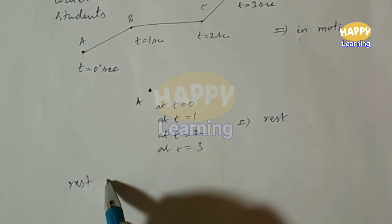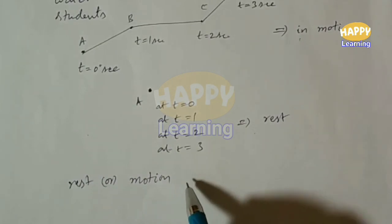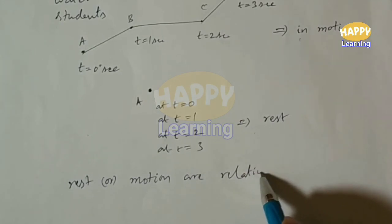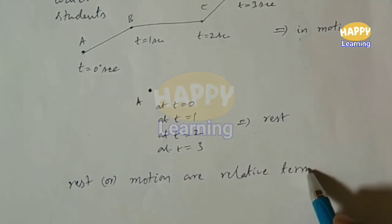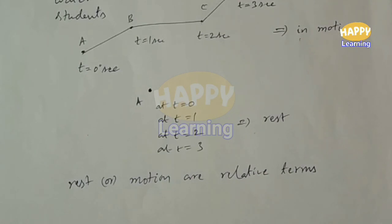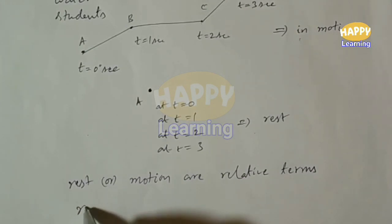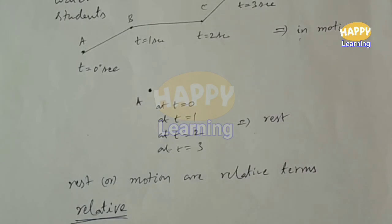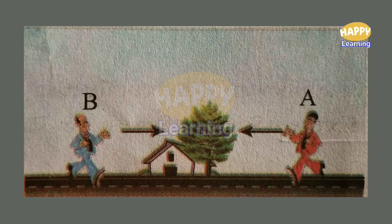Rest and motion are relative terms. Let us understand the clear meaning of this word 'relative' — what is the meaning of relative in rest and motion? Here, you have been given one picture in page number two, figure one in your textbook.